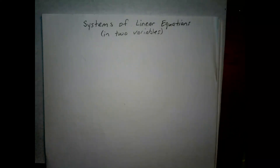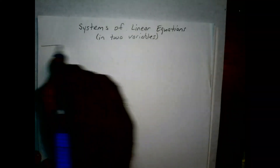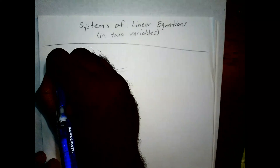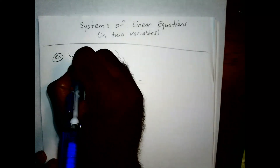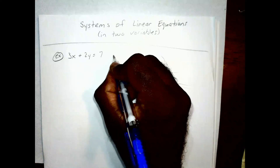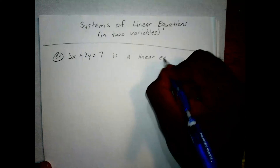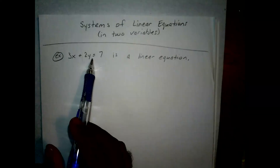Hello everyone. Today we'll be going over systems of linear equations in two variables. For example, 3x plus 2y equals 7. This is a linear equation where you pick a value of x and a value of y that would make this true.